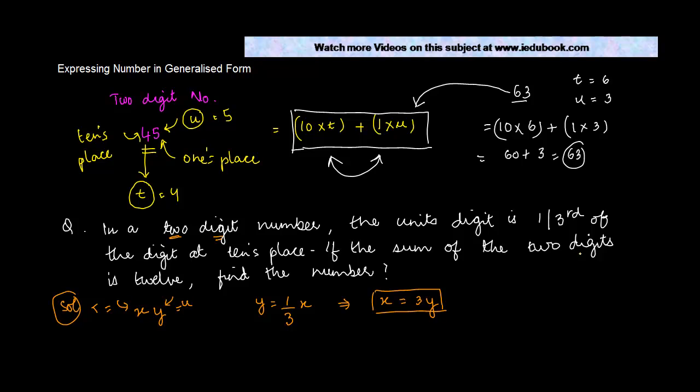If the sum of the two digits is 12, so we are given that x plus y, the sum of these digits is 12. But we know that x is equal to 3y, so we can just substitute the value of x here. 3y plus y is equal to 12. 3 plus 1, 4y is equal to 12 or y is equal to 12 divided by 4. Which is 3. x is equal to 3y is equal to 3 into 3 is equal to 9.